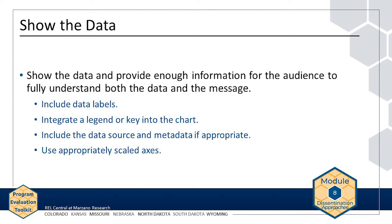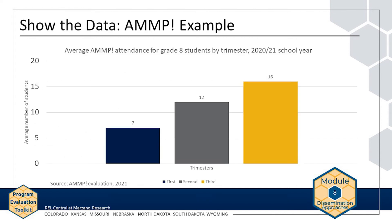Finally, use appropriately scaled axes. The axis scales can easily hide or exaggerate differences between values, obscuring the meaning of the data. Use an appropriate scale that allows the audience to easily see differences between the data without exaggeration. Intentionally manipulating the axes not only leads to misinterpretation, but is unethical. This data visualization shows grade 8 student attendance in AMP. The data are labeled so the audience knows the exact number of students who attended each trimester. The legend is integrated into the chart, and the y-axis includes an appropriate scale that clarifies the amount of growth for the audience.